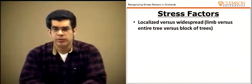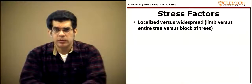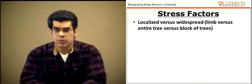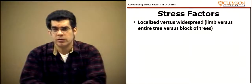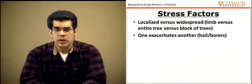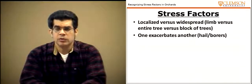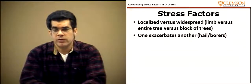Stress may be localized — on an individual limb or single tree — or widespread, affecting an entire block of several hundred trees. Often, one stress can exacerbate another. For example, if a hailstorm causes many wounds to the bark or branches of the tree, this would provide sites for borers to get in and cause damage.